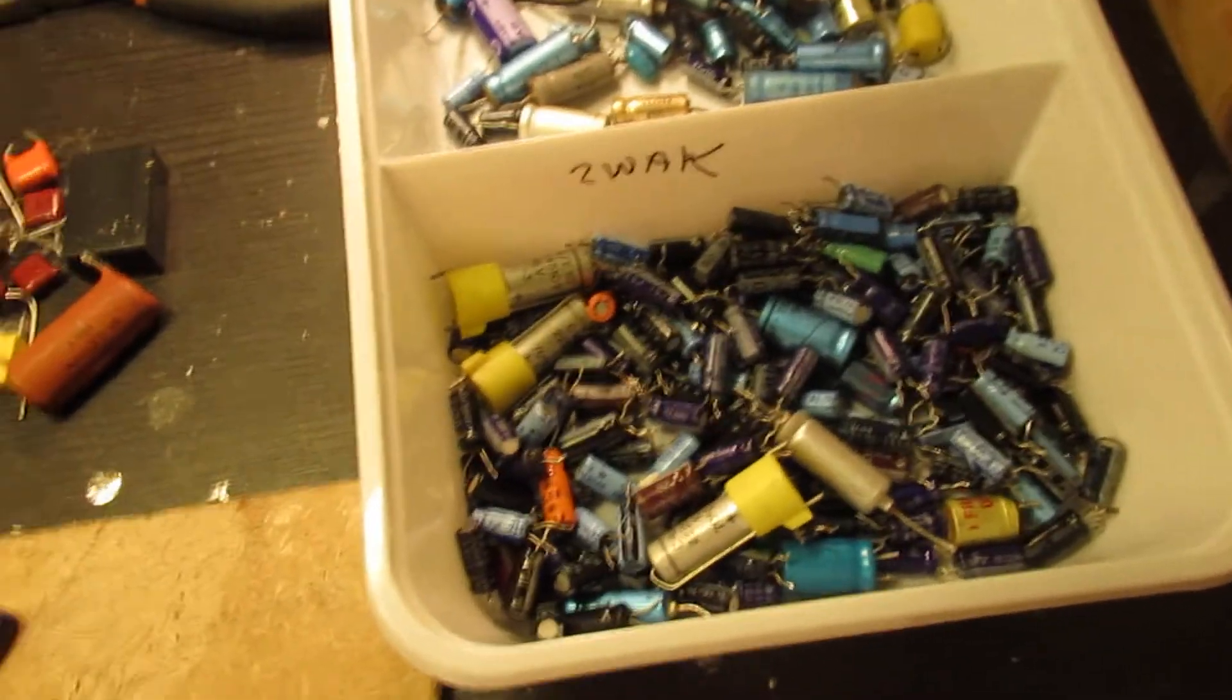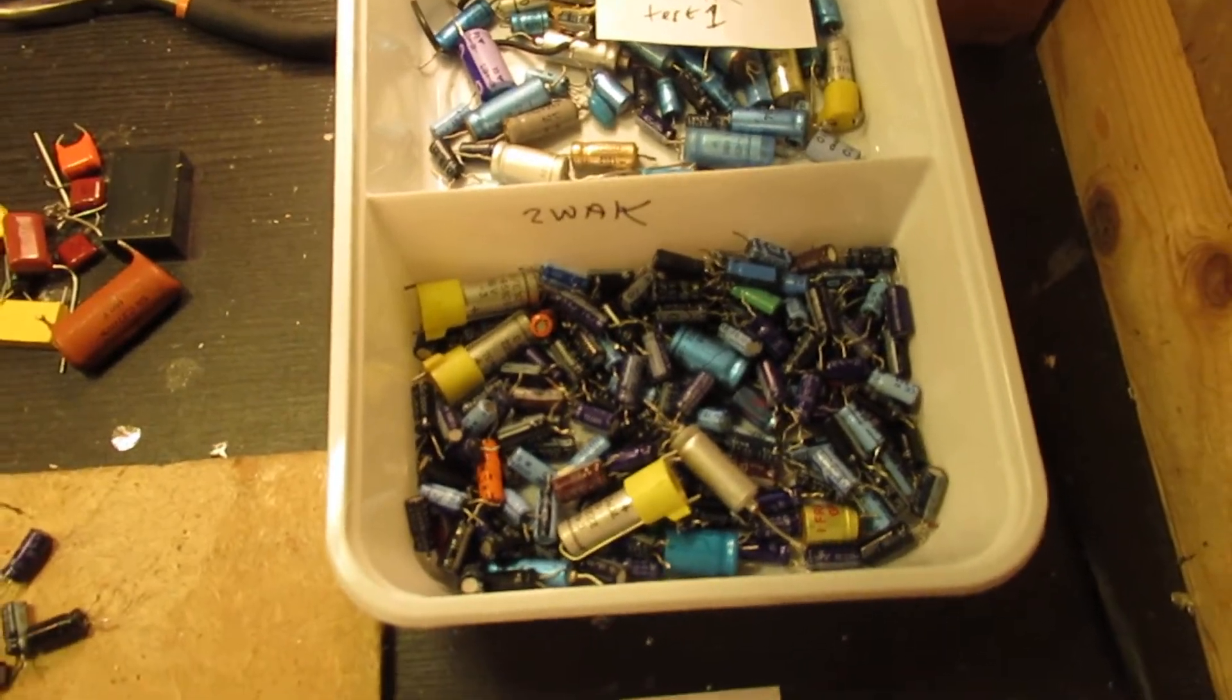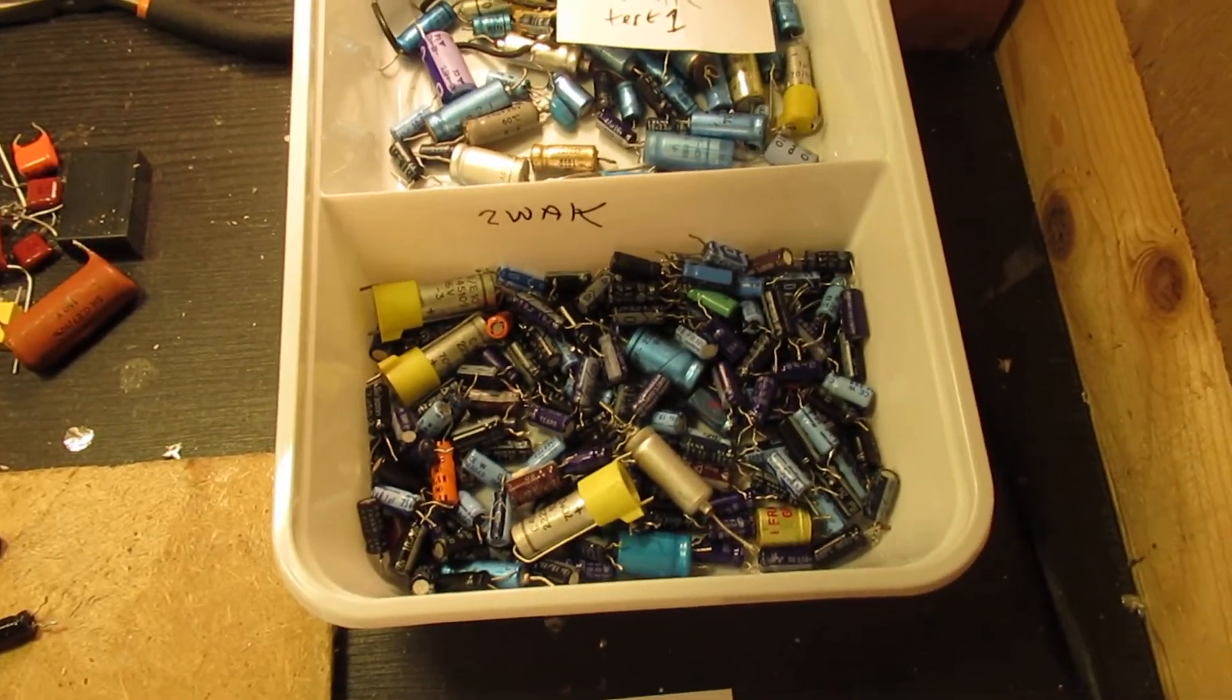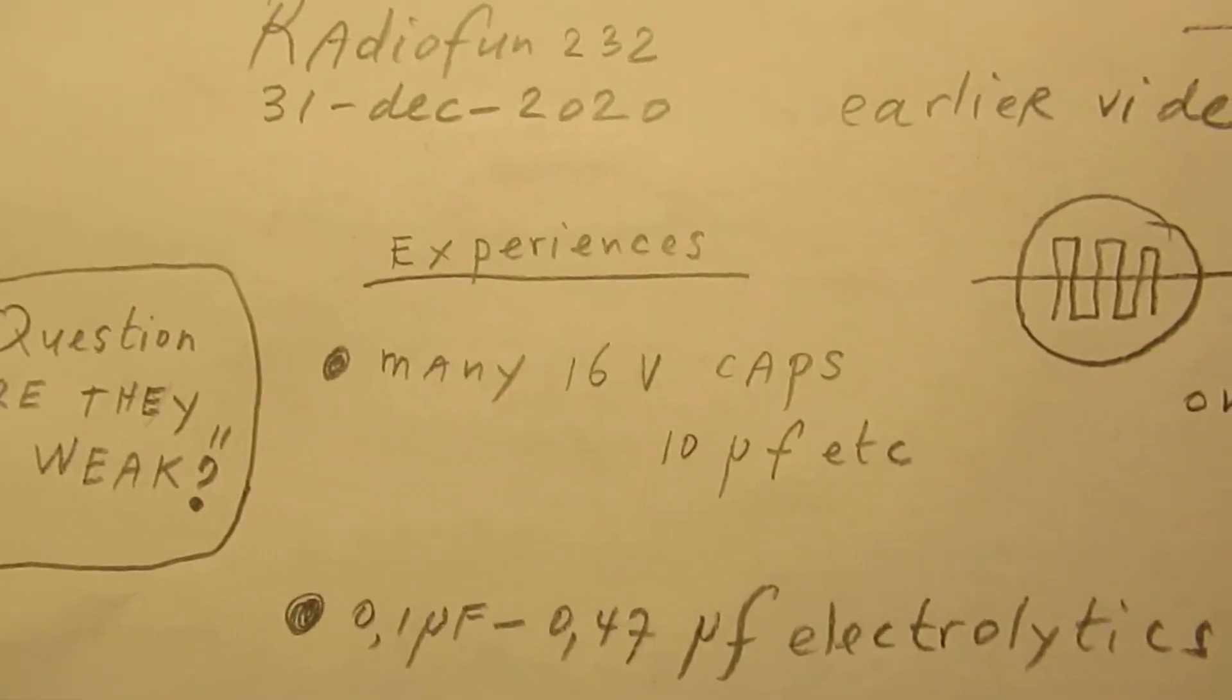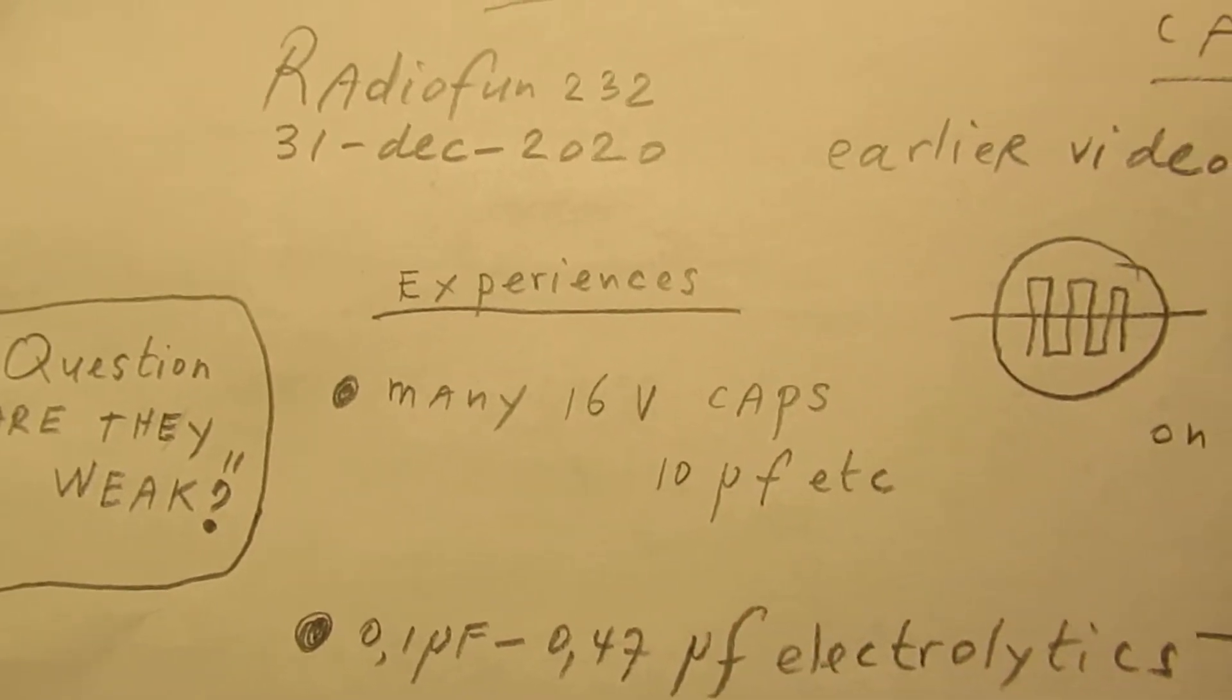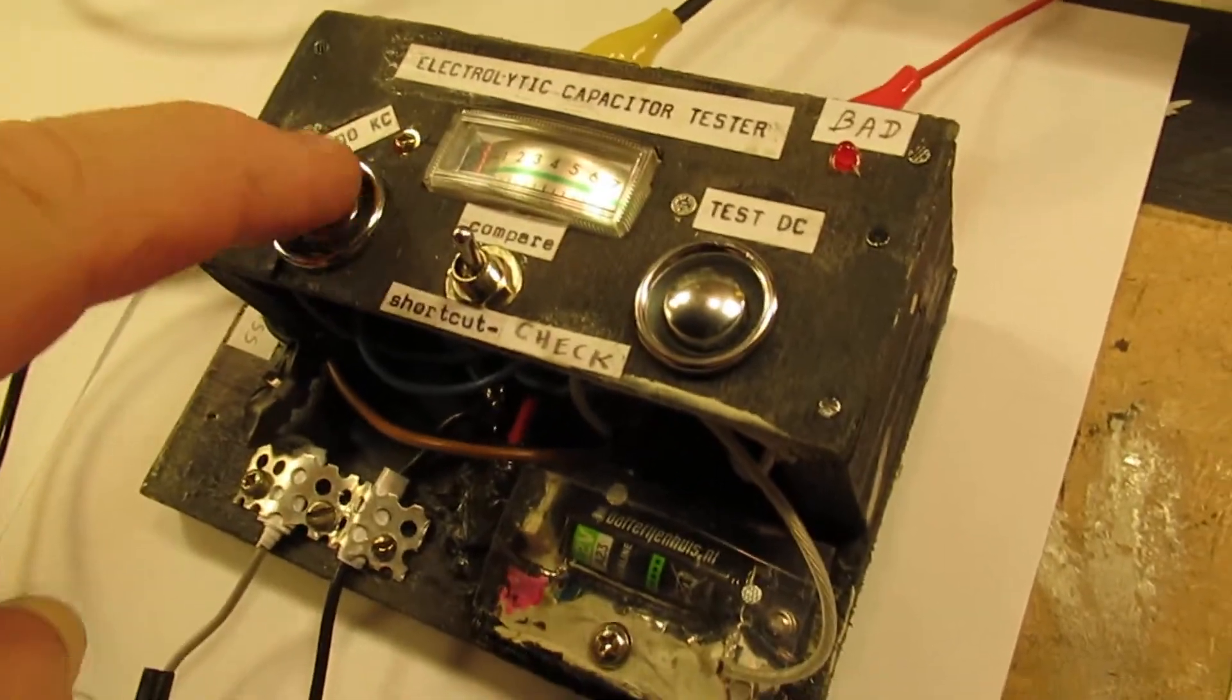I found many deviations in the scope views when I tested them. Many 16 volt capacitors, 10 microfarads, 15 microfarads, when I tested them with the unit here, push the button.